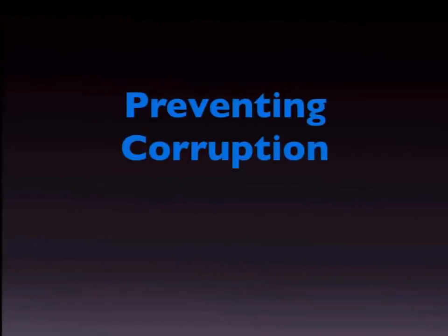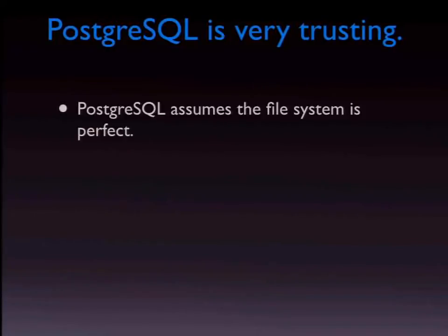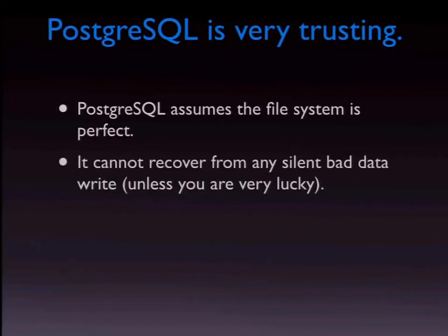The best kind of corruption is the kind you didn't have because you prevented it. Postgres is very trusting — it basically assumes the underlying file system is perfect. If you write a sector out, it can't recover from any bad data, unless that hit didn't occur in a part of the record that Postgres needed.